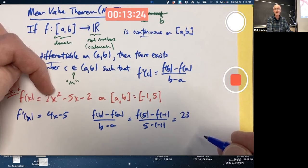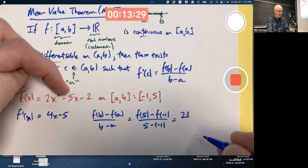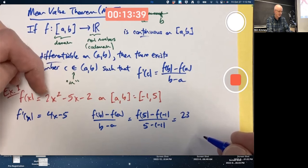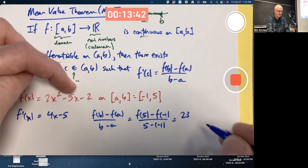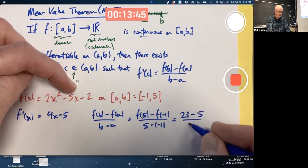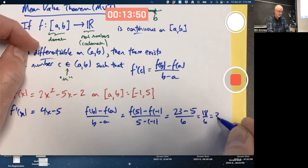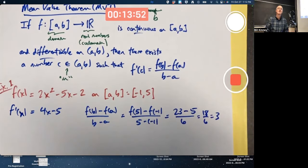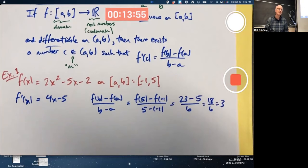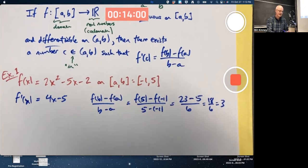How about if I plug in negative 1? Negative 1 squared is positive 1, times 2 is positive 2. Minus 5 times negative 1 is really the same as plus 5. So we've got 2 plus 5 minus 2 is 5. 5 minus negative 1 is 6. This becomes 18 over 6, which is 3.